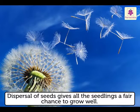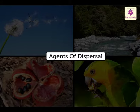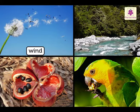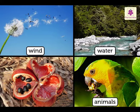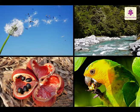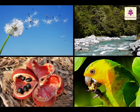Dispersal of seeds gives all the seedlings a fair chance to grow well. The various means through which seeds are dispersed are wind, water, animals, and explosion of the fruit itself. These are called agents of dispersal. Let's learn more about each of them.